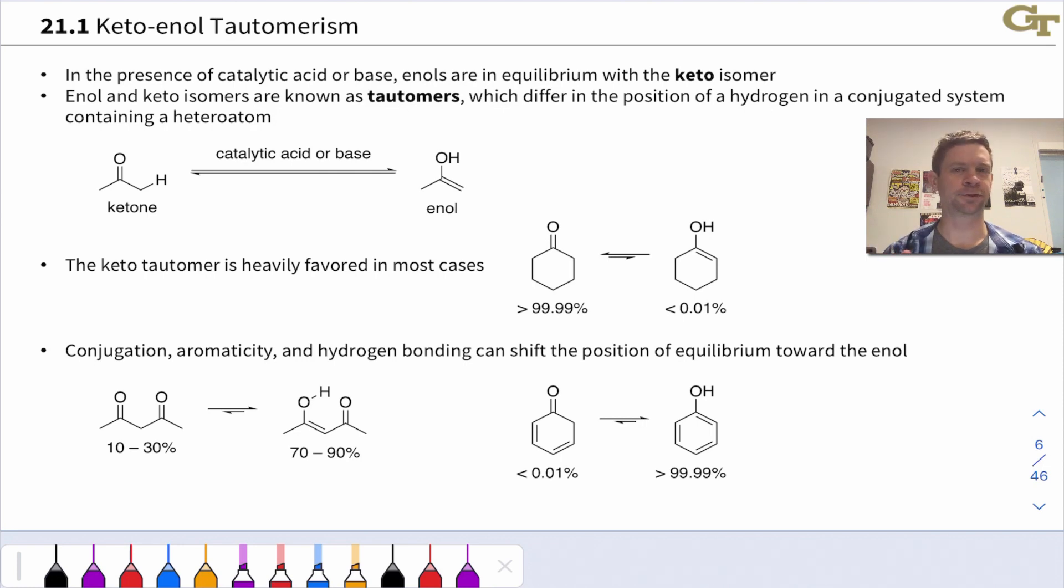Let me back up for a second and mention a point about nomenclature. The ketone and enol forms are known as tautomers. They're called tautomers because they have this particular isomeric relationship where a hydrogen, or a proton, has moved from one end of a pi system to the other, thinking about the enolate as a three-atom pi system.